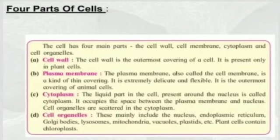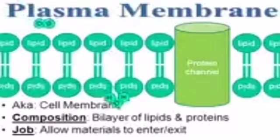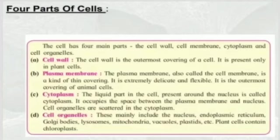Four parts of a cell. The cell has four main parts: the cell wall, cell membrane, cytoplasm, and cell organelles. The cell wall is the outermost covering of a cell and is present only in the plant cell. The plasma membrane, also called cell membrane, is a thin, extremely delicate and flexible covering. It is the outermost covering of animal cells. The liquid part in the cell present around the nucleus is called cytoplasm. It occupies the space between the plasma membrane and the nucleus. Cell organelles are scattered in the cytoplasm.